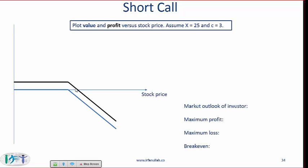Next is a short call, which is a mirror image of what we just saw. The inflection point is the strike price, which is 25 in our case. A short call will make a maximum profit equal to 3, which is the value of the call option — so maximum profit is C. The market outlook of the investor is bearish. Maximum loss is infinite, and the break-even point is the same as before: X plus C.